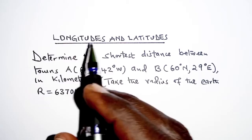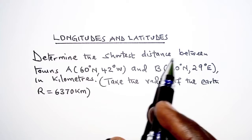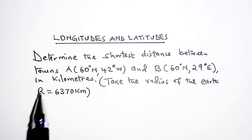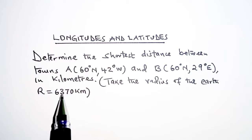This falls under the topic of longitudes and latitudes. The question we have here is: determine the shortest distance between towns A (60 degrees north, 42 degrees west) and B (60 degrees north, 29 degrees east) in kilometers. Take the radius of the earth as 6370 kilometers.